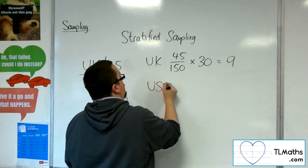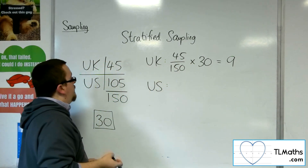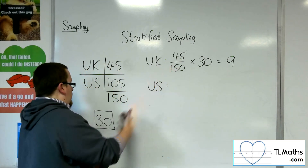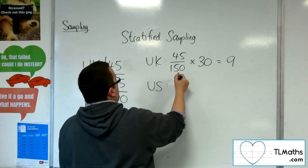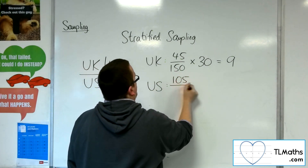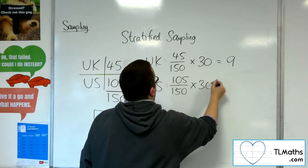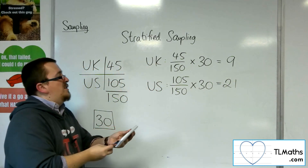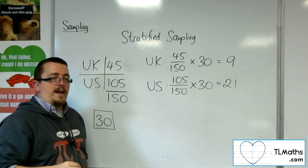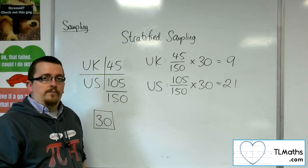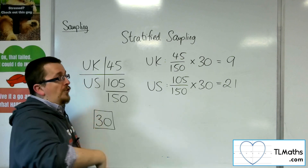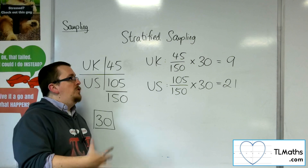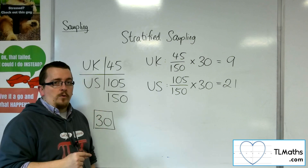So I would need 9 people to be picked from the UK crowd. For the US, it would be 21, because I've picked 9 from the UK. The calculation would be 105 divided by 150 times by 30, and that gets you the 21. So I need to pick 9 people born in the UK and 21 people born in the US.